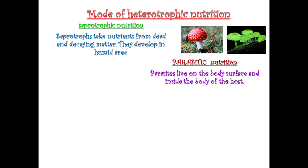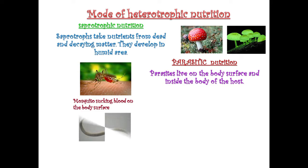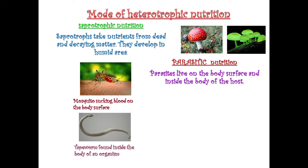The second mode is parasitic nutrition. Parasites live on the body surface and inside the body of a host. For example, mosquitoes suck blood from humans and are parasites living on the body surface. Tapeworms take nutrients from inside the body of an organism and can live in any part of humans or animals.